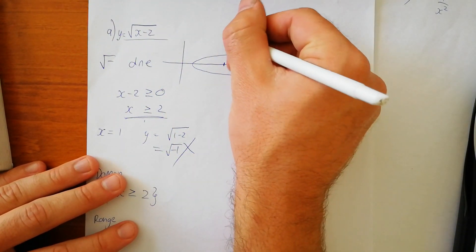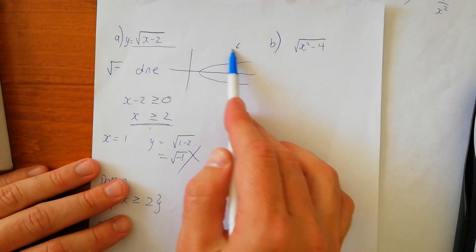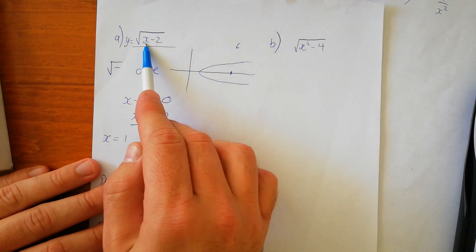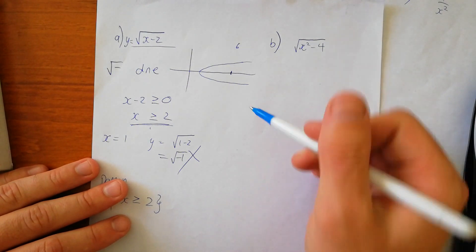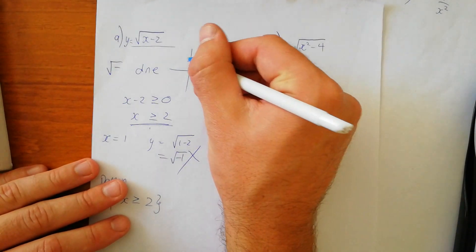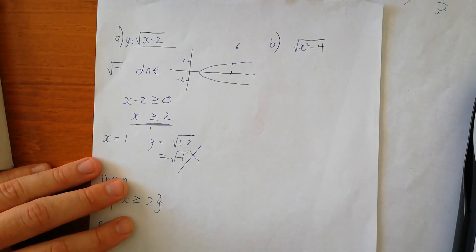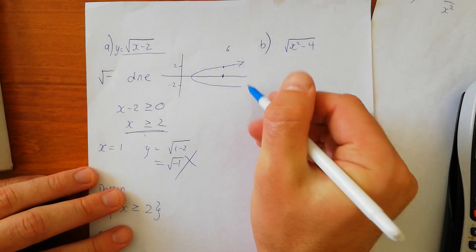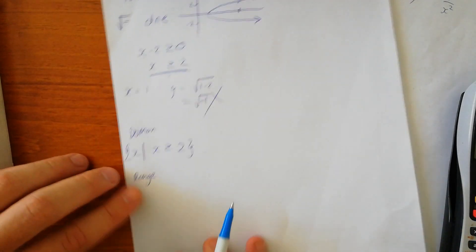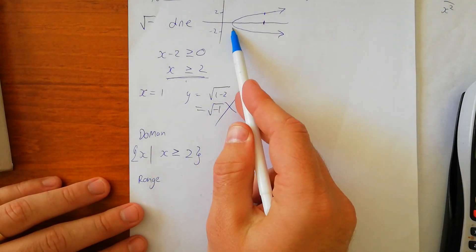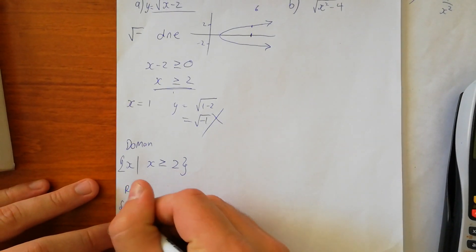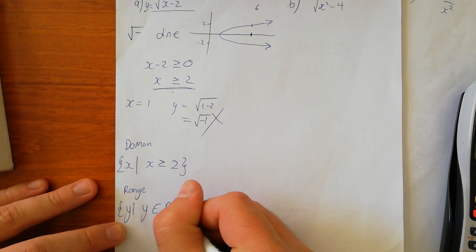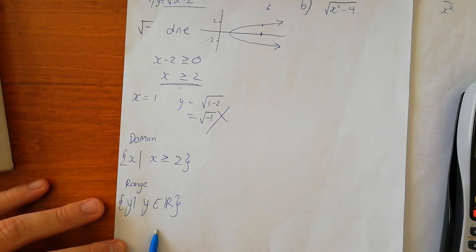What happens if we put x equals 6 into this equation? We have the square root of 6 take 2. 6 take 2 is 4, so you have the square root of 4. The square root of 4 is actually plus 2 and minus 2, so there are actually supposed to be two answers — it should look like both branches. The restriction is on the domain; x has to be greater than 2. For the range, the range can actually be any value of y — y where y belongs to the set of all real numbers.